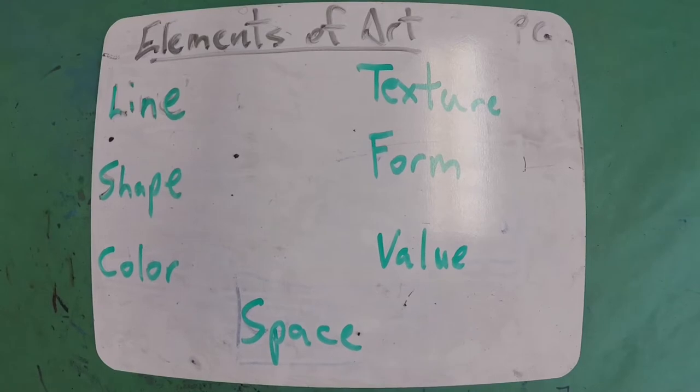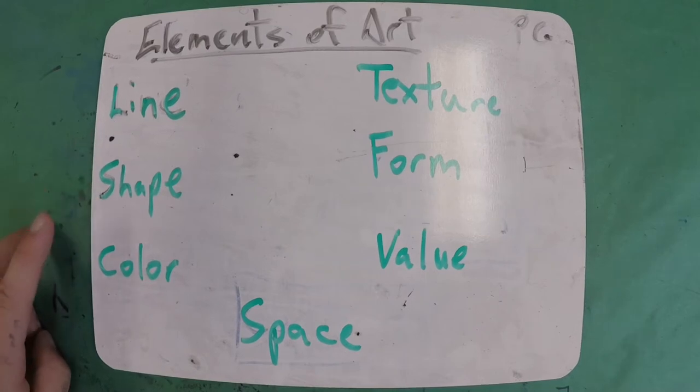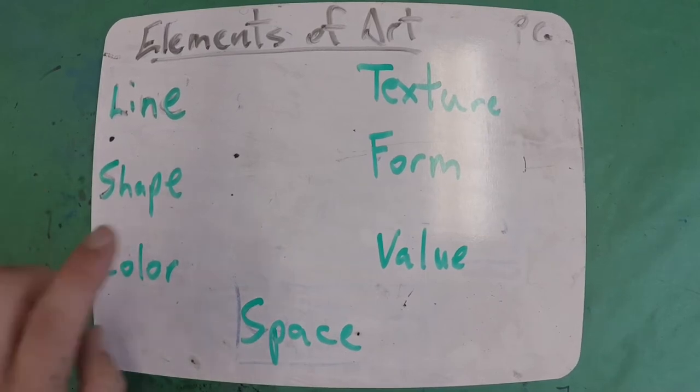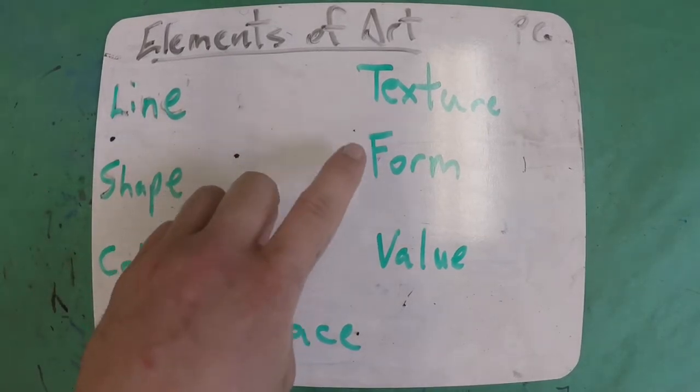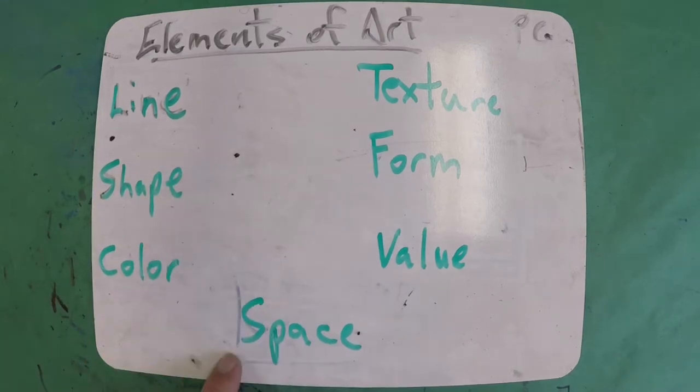So let's start with our elements of art. Please repeat these words after me: Line, shape, color, texture, form, value, and space.